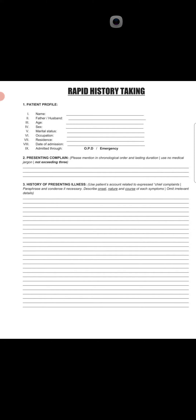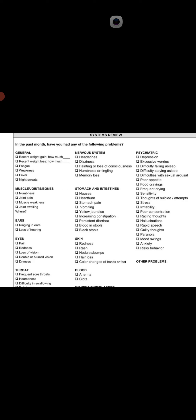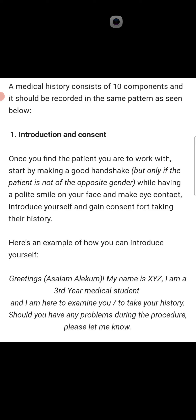Whether you work in a private hospital or government sector, when using the rapid history taking sheet, you will know everything about this. A medical history consists of 10 components and should be recorded in the same pattern. The first step in medical history taking is the introduction and consent, and these steps are the same for general surgery, medicine, and every field.